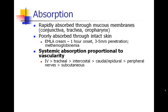How much local anesthetic is absorbed after injection depends greatly on how vascular the area is. Injection into poorly vascularized tissue carries little risk of systemic absorption, while richly vascular areas carry much higher risk. IV injection carries the highest risk, followed by tracheal or intercostal administration, with subcutaneous and peripheral nerve administration being much less likely to cause systemic absorption.